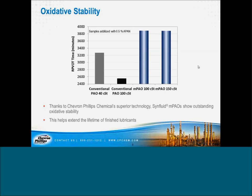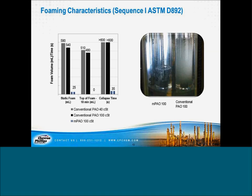The oxidative stability on this next slide is shown. We look at RPVOT in our laboratory as the main way of measuring oxidative stability. In this case, we're looking at just the neat base oils with a half weight percent of an antioxidant—phenyl-alpha-naphthylamine—and we're seeing results in excess of 3,800 minutes, which is very good. The conventional PAOs are actually very good on oxidative stability. The improvement we have here comes from the know-how for making our low-viscosity PAOs that we've applied to the high-viscosity PAOs. Nevertheless, having a higher oxidative stability should provide longer life for lubricants regardless of the application.